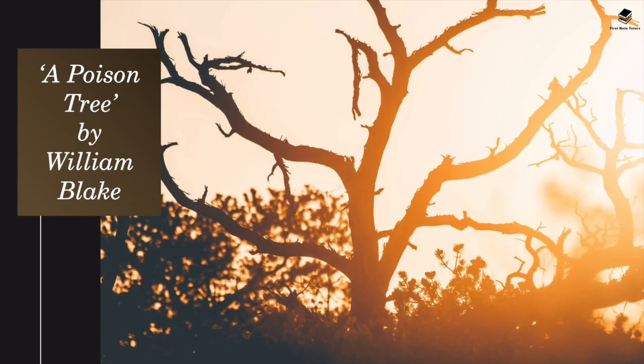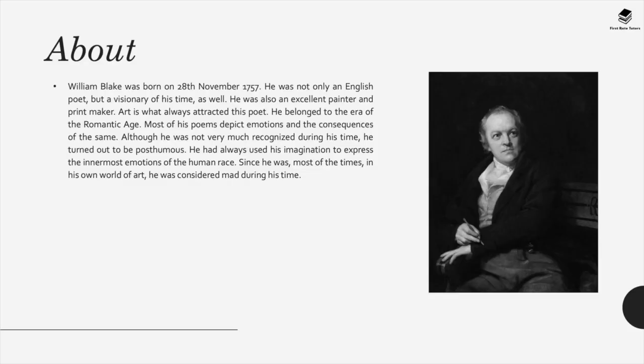This collection begins with A Poison Tree by William Blake. Blake was born on the 28th November 1757. He's not only an English poet but also known as a visionary of his time — a painter and printmaker. He belonged to the Romantic era, whereby poems depict emotions, consequences of emotions, and nature. Nature is seen as the highest manifestation of innocence, while anything to do with the city is seen as somewhat corrupting. Although he wasn't recognised during his time, he turned out to be really famous posthumously.